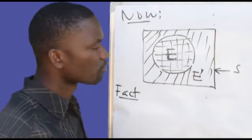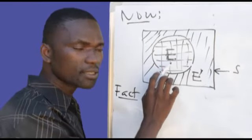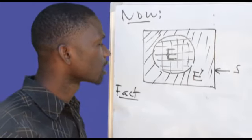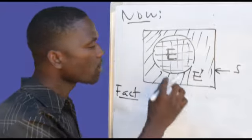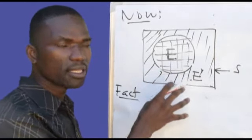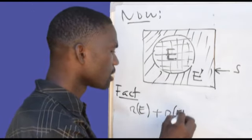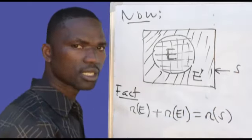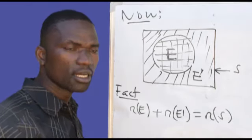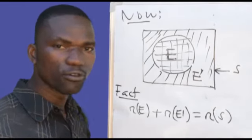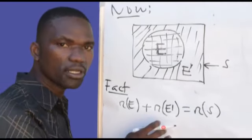From this figure we can extract a fact: the members found inside the circle and all members found outside the circle, combined together, make all members inside the rectangle. So the fact we can extract is: the number of elements inside set E, plus the number of elements inside E-dash, is supposed to equal the number of elements inside S. Using the concept of sets, we can convert this formula into a probability formula.